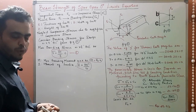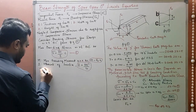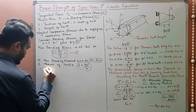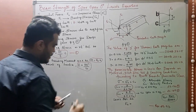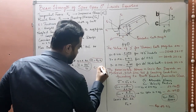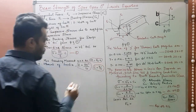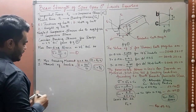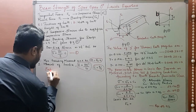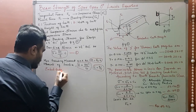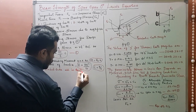You all know the moment of inertia equation for a beam. Next, C is nothing but t / 2. We now substitute all these values into equation one.